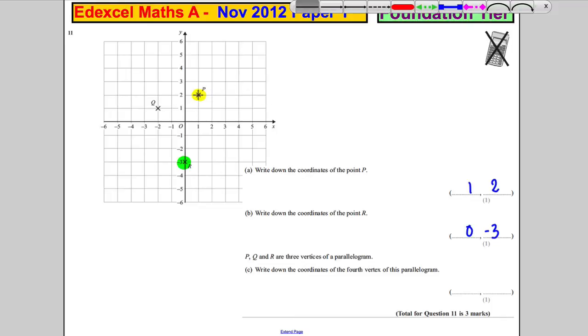Well, if it's a parallelogram, we need a side that is parallel to that. Now this, from Q to P, goes across 3 up 1. So we can do the same from R. I'll go across 3 up 1. It'd be there.